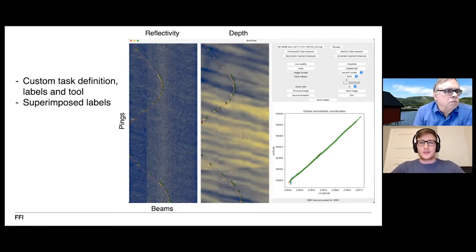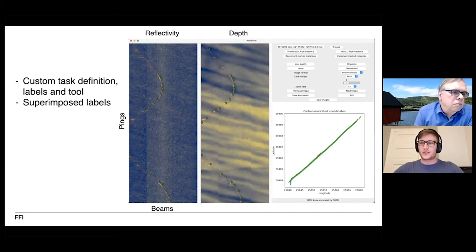In this snapshot you can see the reflectivity and depth channels, and you can see an image segment consisting of 1000 pings and 400 beams. The pings go from top to bottom and also indicate the driving direction of the AUV. Additionally we can see these green marked points and a thin red line connecting them indicating the top of the pipeline which are the labels.